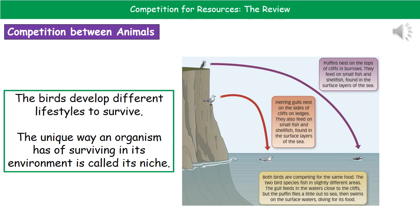Basically, these birds have developed different lifestyles in order to survive, and what we have there is something called a niche. Whenever referring to the niche, we're referring to the unique way an organism has of surviving in its environment. In this case we've got different feeding niches — the herring gull stays closer to the cliff and feeds in those areas, whereas the puffin feeds further out at sea. So we've got two different niches for feeding even though they live in exactly the same area on the cliff.